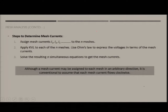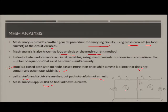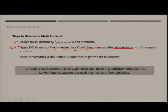The steps for mesh analysis are: first, assign mesh currents i1, i2, i3 as per the number of meshes. Second, apply KVL to each of the n meshes and use Ohm's law to express the voltage in terms of the mesh currents — consider the voltage drop across each and every element. Third, solve the resulting n simultaneous equations to get the mesh currents.